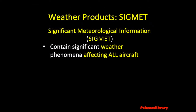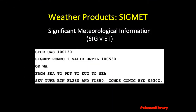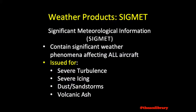Sigmets contain significant weather phenomena affecting all aircraft. Formatted similarly to an airmet, as shown in the example sigmet provided below, sigmets are issued for severe turbulence or icing, widespread dust storms or sand storms, and volcanic ash. Sigmets are issued as soon as conditions are encountered, or as soon as they are expected, to give operators of aircraft notice of potentially hazardous conditions. Sigmets remain valid for up to four hours as necessary.